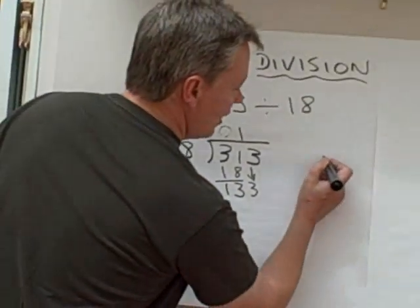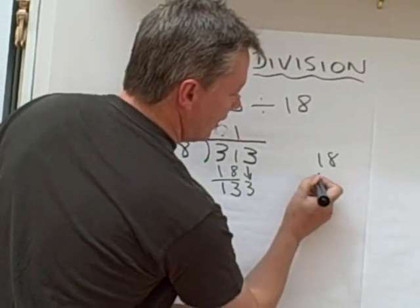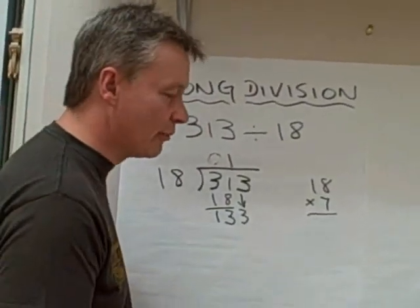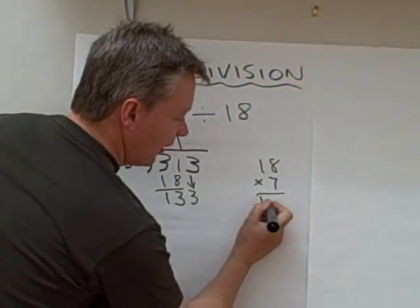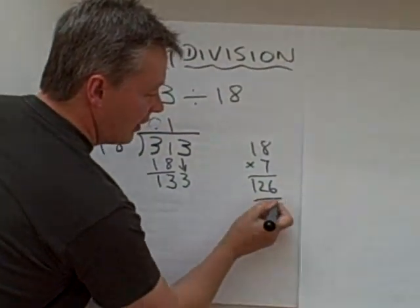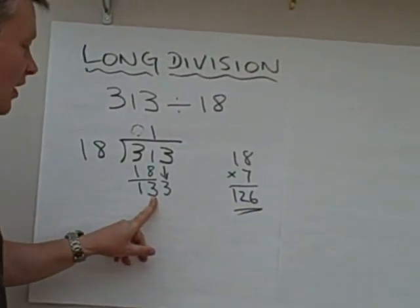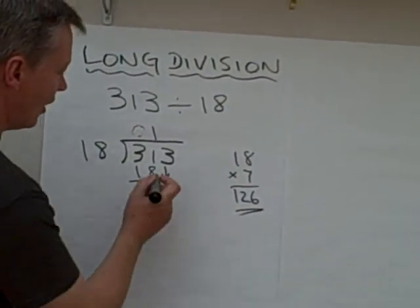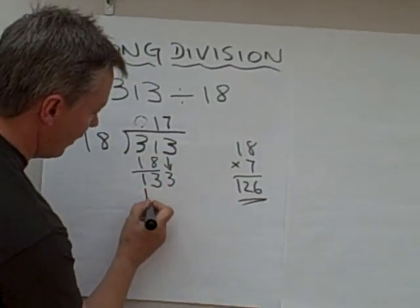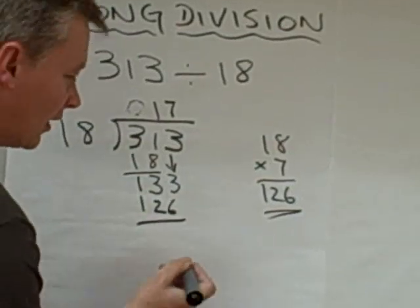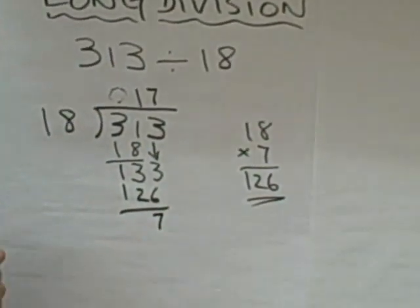The first thing I'm going to do is I'm going to say 18 times 7. And like we did short multiplication before, if I work that out, that comes out as 126. And guess what? That's very close to 133. So it'll go in 7 times. There's 126. I take away the two numbers and I'm left with 7.